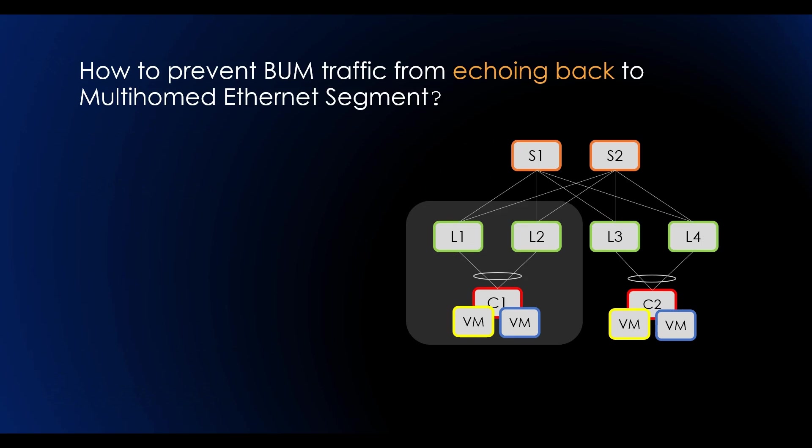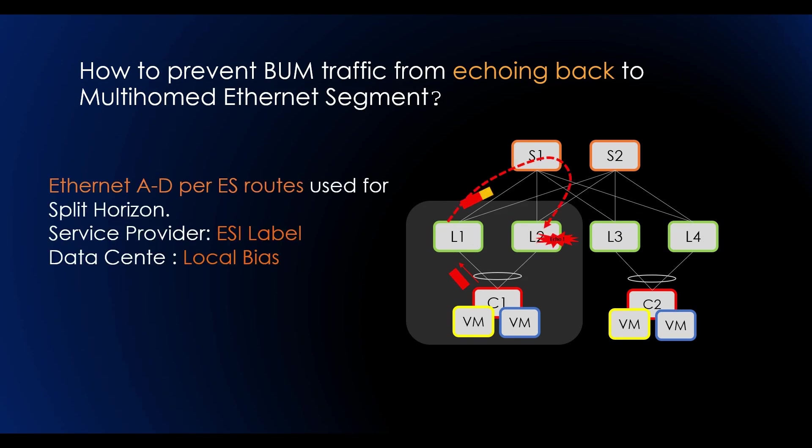So how to prevent BUM traffic from echoing back to multi-homed Ethernet segment? We have Ethernet AD per ES route used for split horizon. In service provider domain, the PE uses the ESI label, but in data center, it uses local bias.